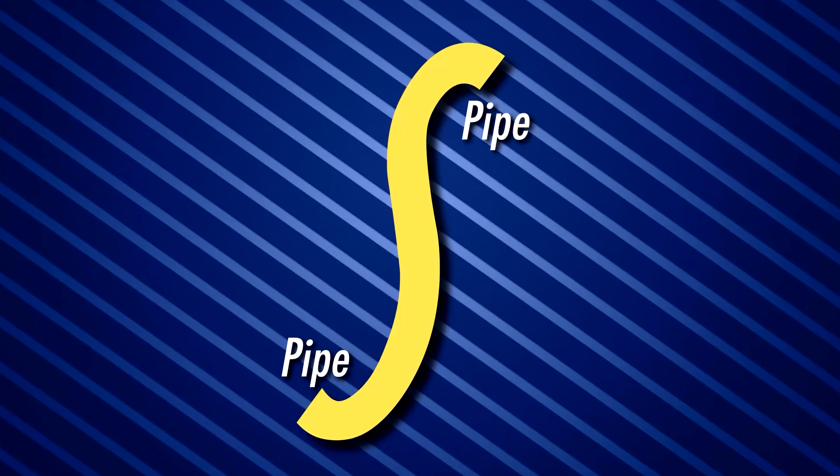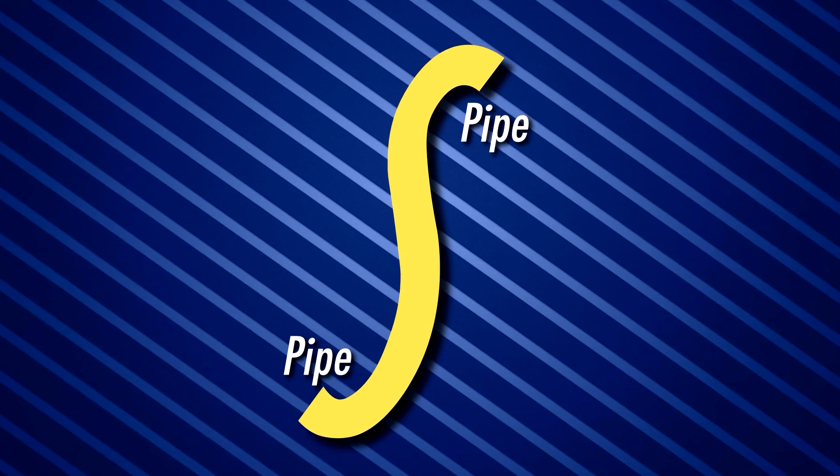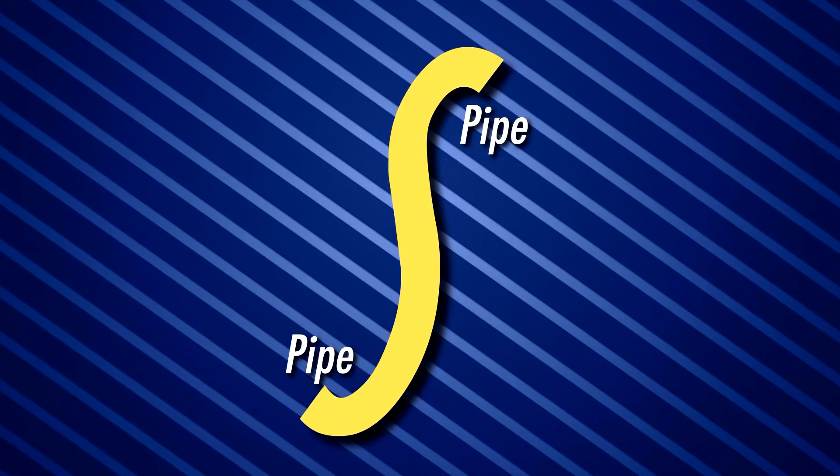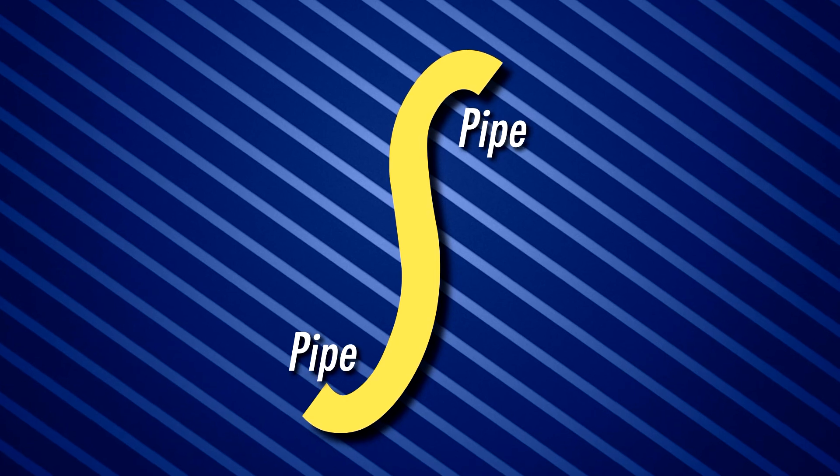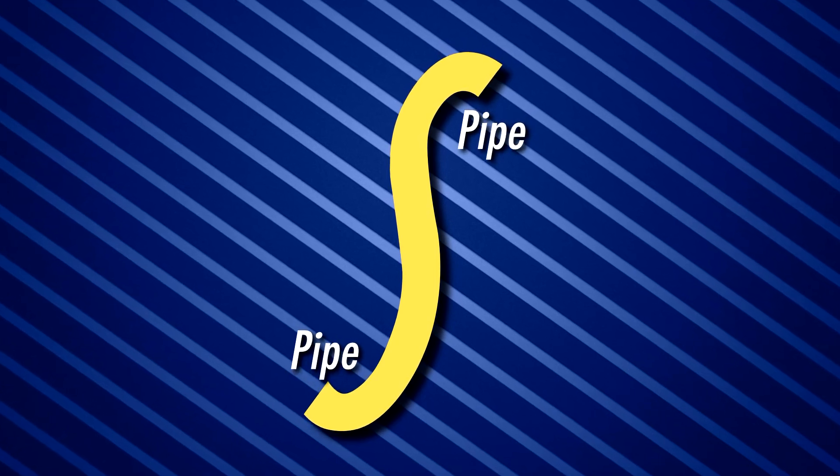When using a socket coupling to join the coiled pipe, if possible, S the pipes on either side of the coupling to compensate for coil curvature and make it easier to join the second pipe to the coupling.